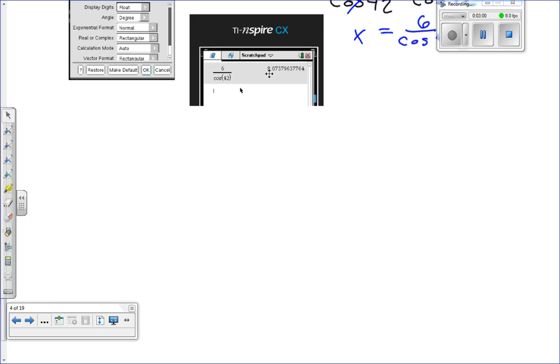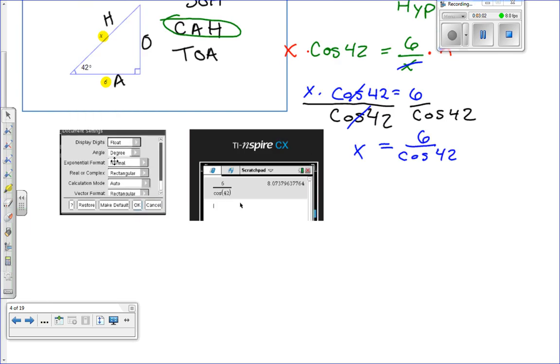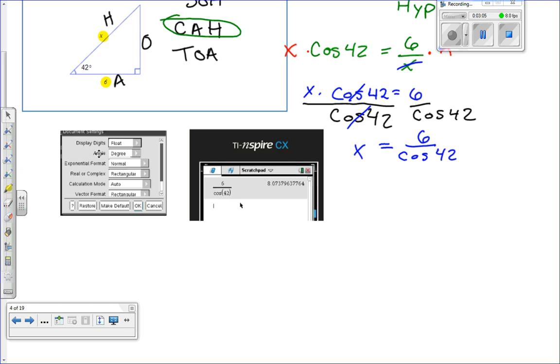There's two settings you need to know. If you go under document settings, you want to make sure you're in degree mode. Under angle, you want it to say degree. And then for display, digit display, you can set it as float - it'll just go out as far as it wants to.